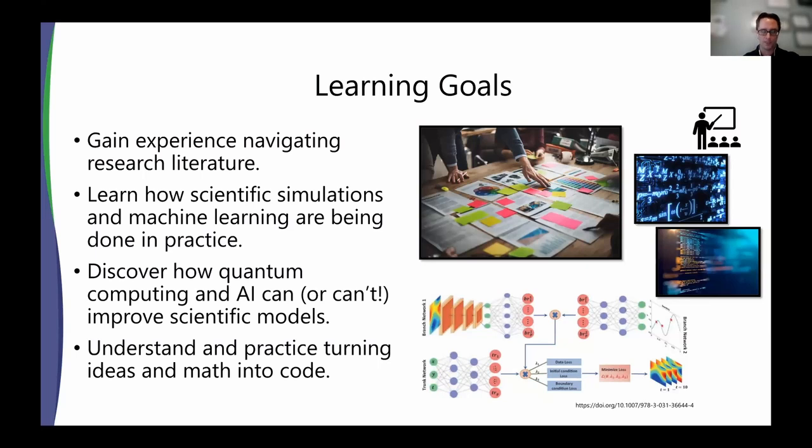And then the core of this is discover how quantum computing and AI can or maybe can't improve scientific models. It could very well be the case that these technologies don't provide an advantage to a particular application. But as with most things in research, knowing the negative is sometimes just as important as knowing the positive because it can give you information on where you should be focusing your efforts going into the future.